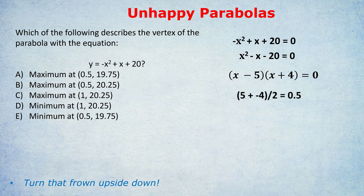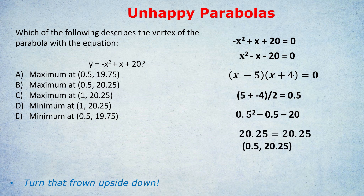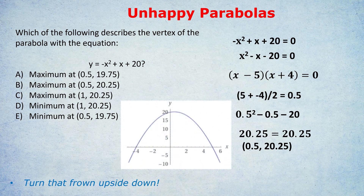We already know the answer must have an x-coordinate of 0.5, so it's either a, b, or e. To find the y-coordinate, we put 0.5 back into the equation. Using the multiplied-by-minus-one version: 0.5 squared minus 0.5 minus 20 gives us 20.25. So the coordinates are (0.5, 20.25). That tells us the answer is b. But how would we know if it's a maximum or minimum? This comes back to the unhappy parabola: if there's a negative in front of the x-squared, the graph looks unhappy and we have a maximum vertex. That's why the answer is b — it's a maximum at (0.5, 20.25).